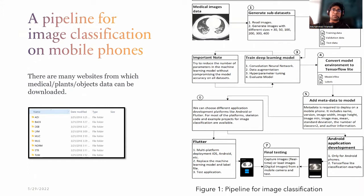In this section we will discuss the pipeline for image classification on mobile phone. There are many websites from which medical, plant, or object data can be downloaded. Step zero is to place images in a separate folder belonging to a specific category, as shown in the diagram. Once you obtain the images, the next step is to generate sub-datasets and images of different sizes. It is important to reduce image size because a large image can increase the size of the model.